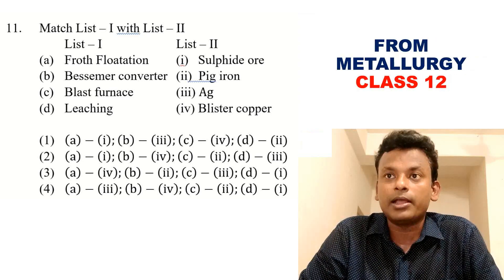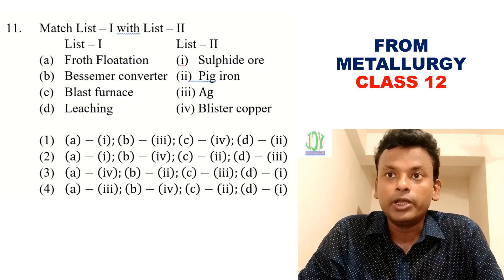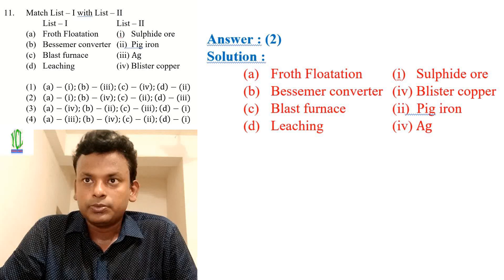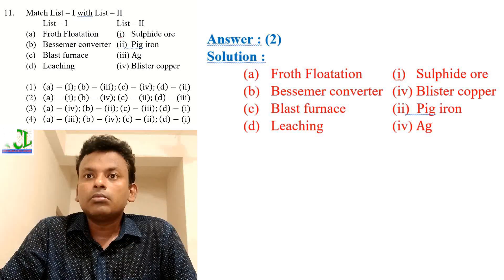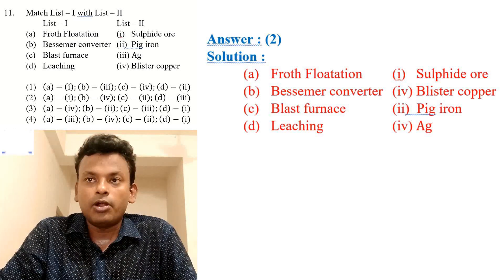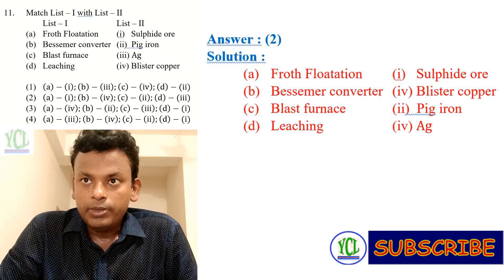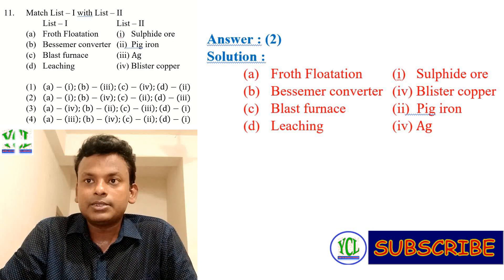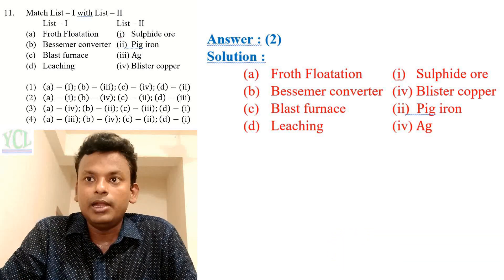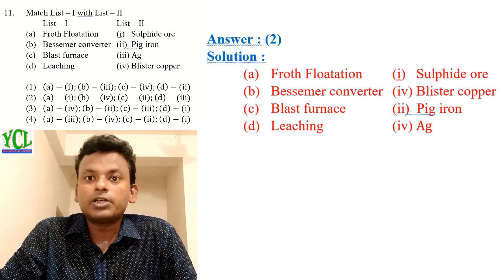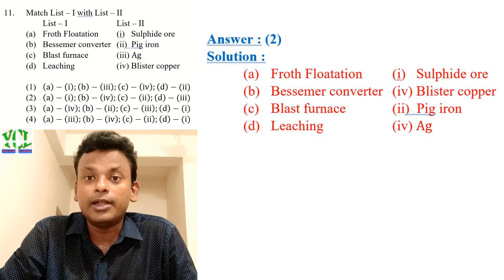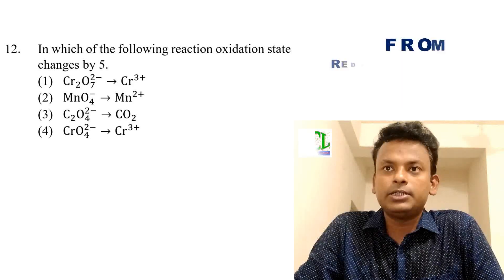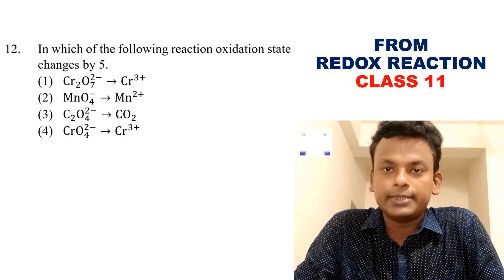Question 11: Match List 1 with List 2. The answer is option 2. Froth flotation is for sulfide ores; the Bessemer converter gives blister copper; blast furnace gives pig iron; and leaching is used for silver. So option 2 is the correct answer. Question 12: In which reaction does the oxidation state change by 5?